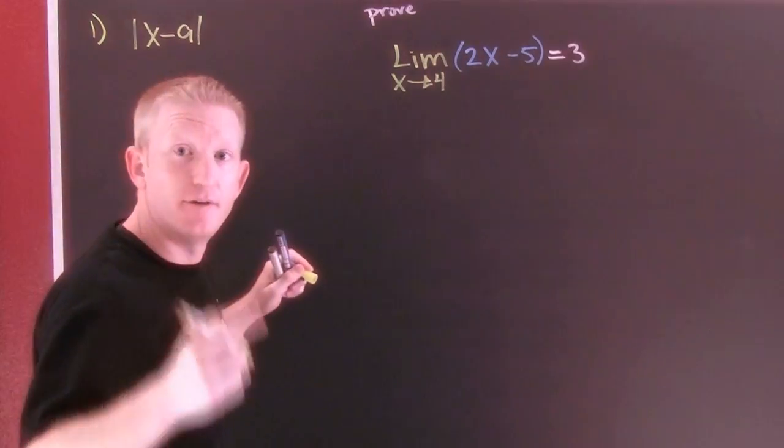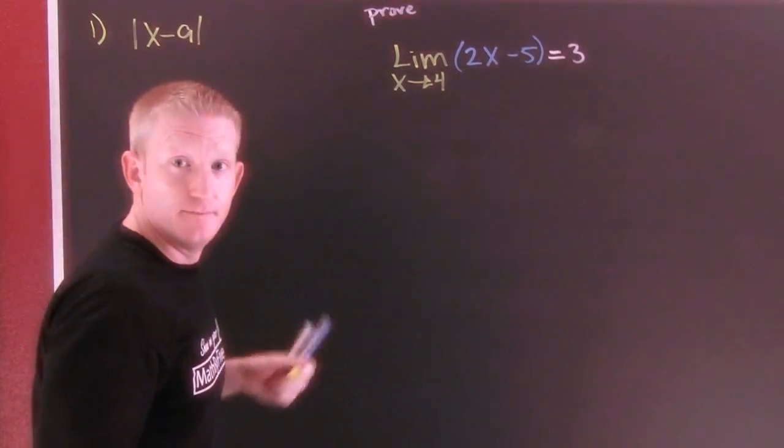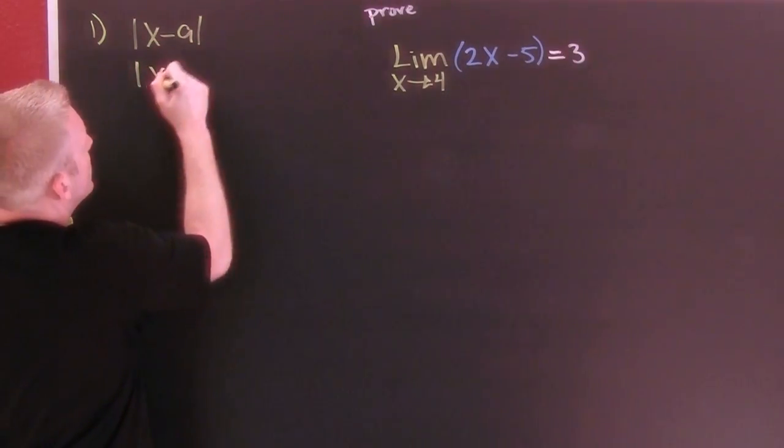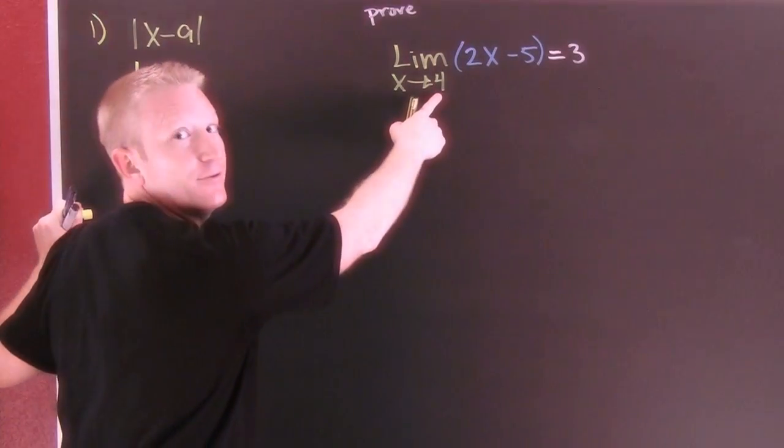I need to identify my x minus my a, and on this nice linear example - a first example, look for another one, a harder one. Okay, ready? So then this is the absolute value of x minus four. That's my a.